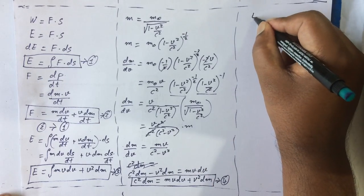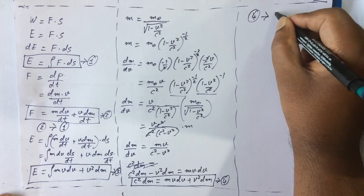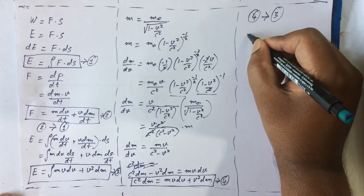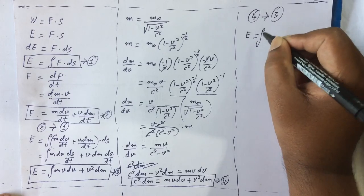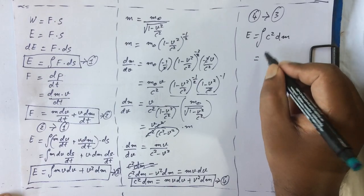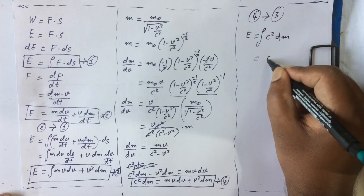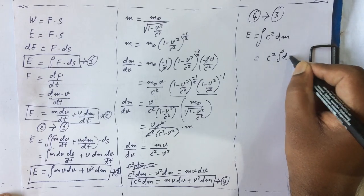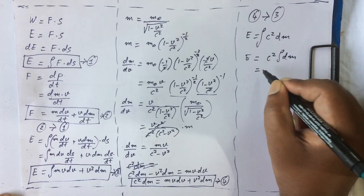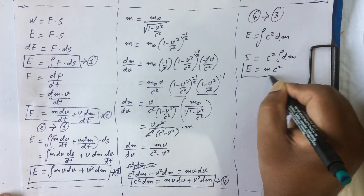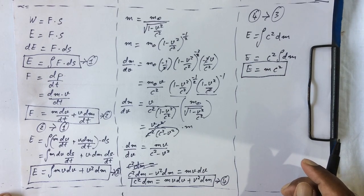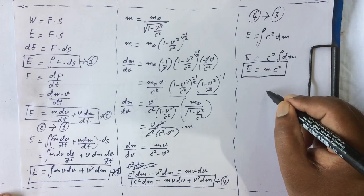Now if we substitute Equation 4 into Equation 3, since the terms mvdv + v²dm match, we can write energy as the integral of c² dm. Since the speed of light is constant, c² remains outside the integral, and the integral of dm becomes m, giving us E equals mc². This is that famous equation — this is how mass and energy are related. Thanks.